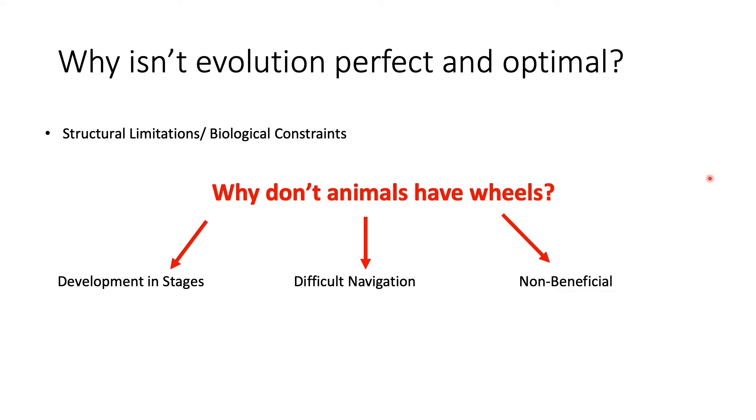Another reason why evolutionary design is imperfect is that there are structural limitations and biological constraints that can prevent certain things in organisms. A really big question that comes up when talking about evolutionary biology is, why don't animals have wheels? Wheels are really beneficial as we can see in cars and bikes—they get from point A to point B very quickly and efficiently.